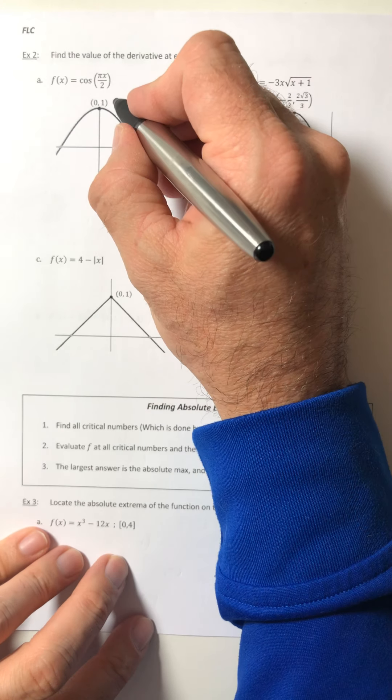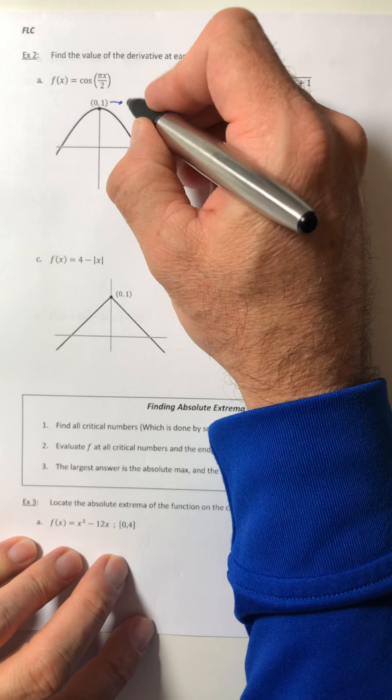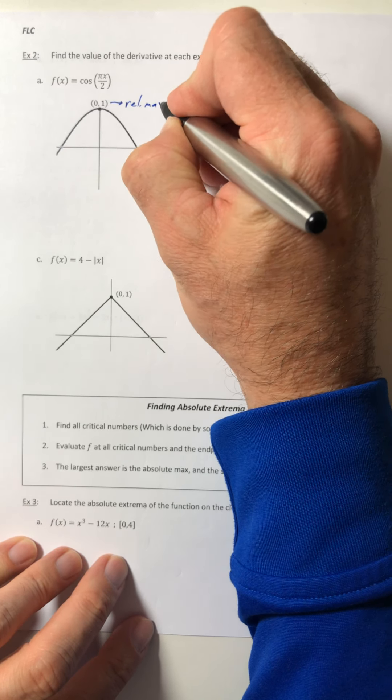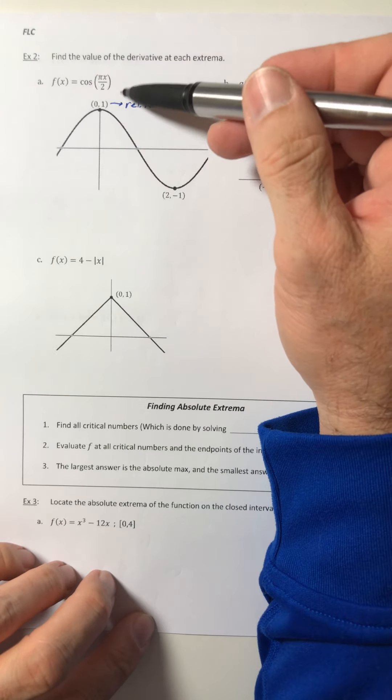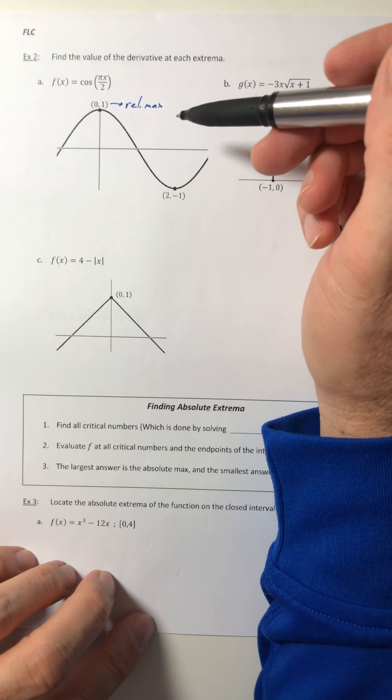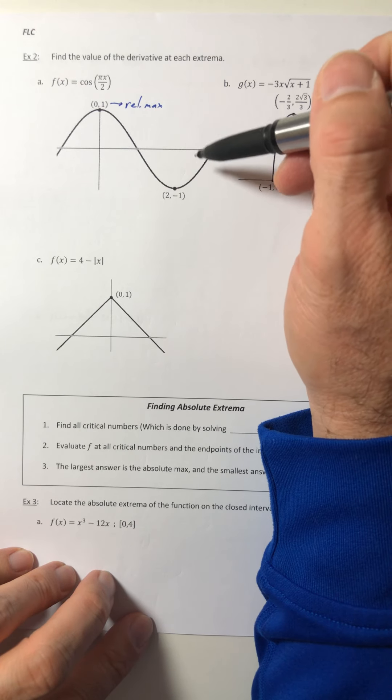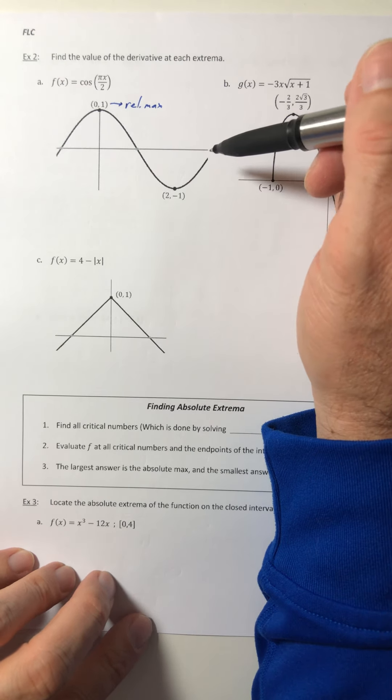So if you look at the graph here, like on part A, that is a relative max. And the theorem says, hey, if you have a relative max, you've got a critical number, which means the derivative is either zero or undefined.